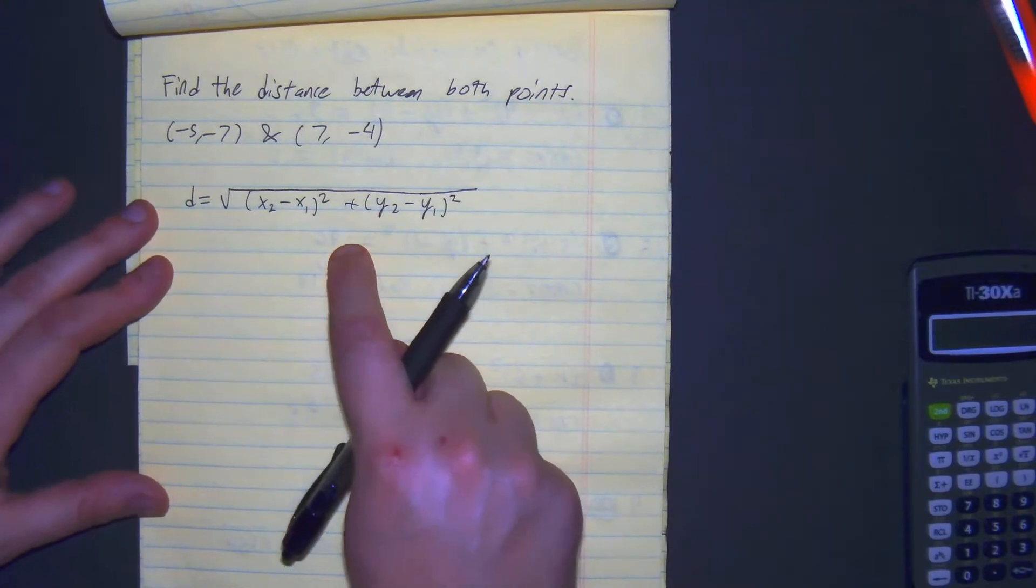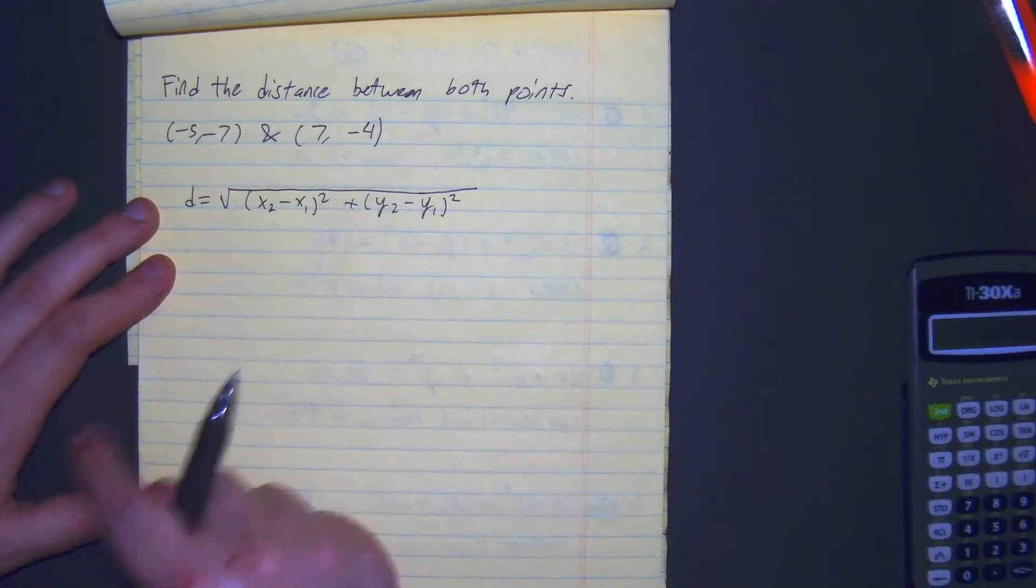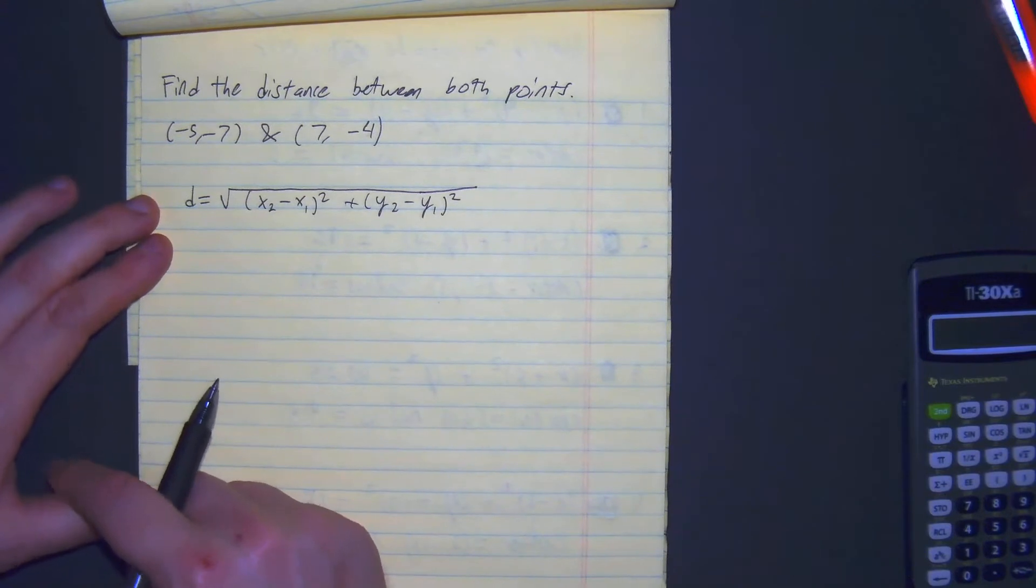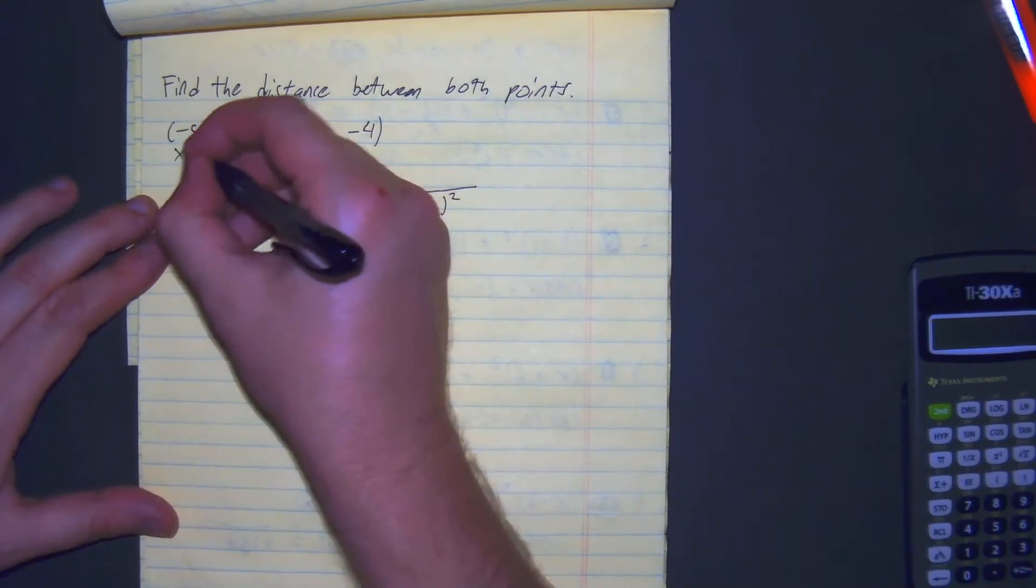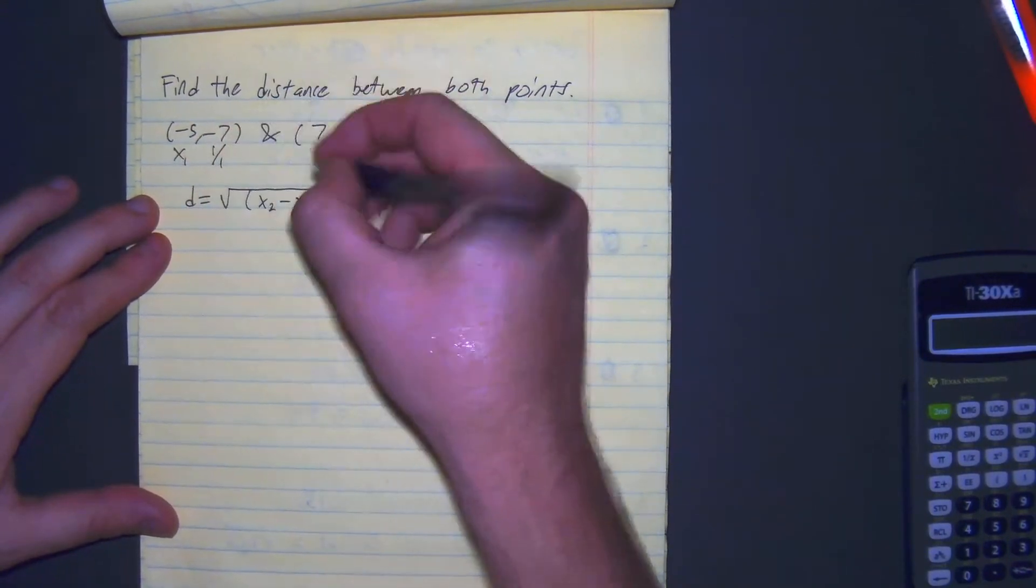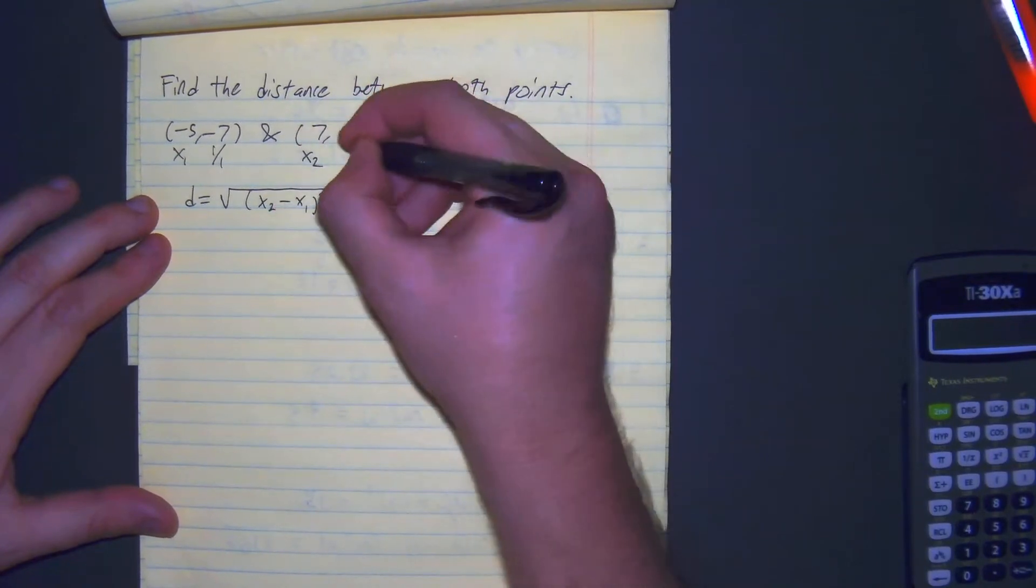From here, I can see that I have to label my subscripts on my points just to make sure that I follow through with the correct order. x sub 1, y sub 1, x sub 2, y sub 2.